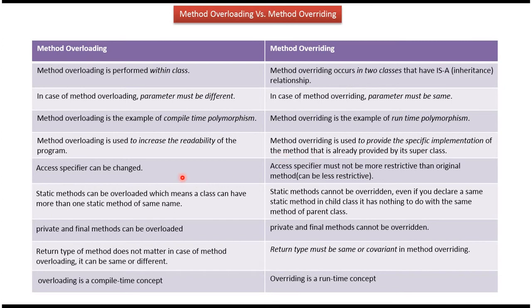Access specifier can be changed in method overloading. In case of method overriding, the access specifier must not be more restrictive than the original method — it can be less restrictive.